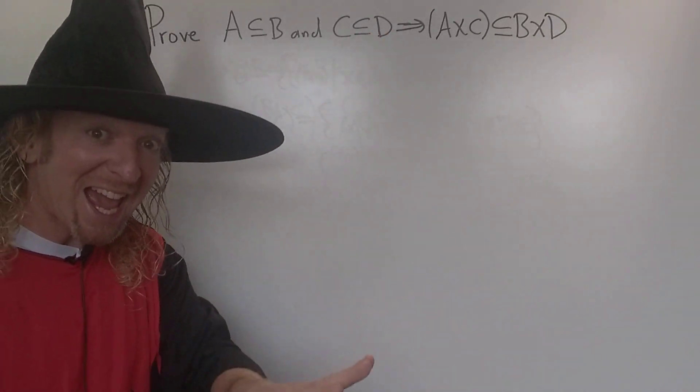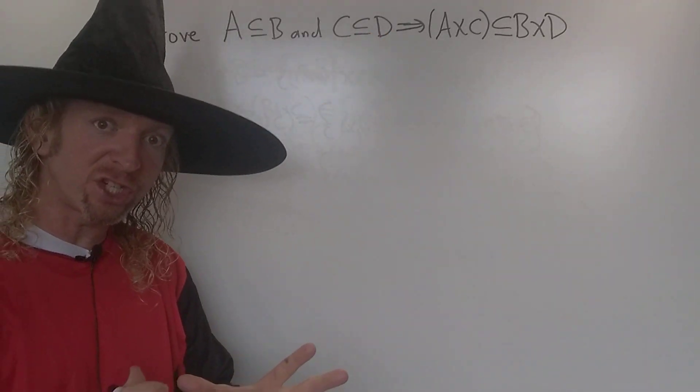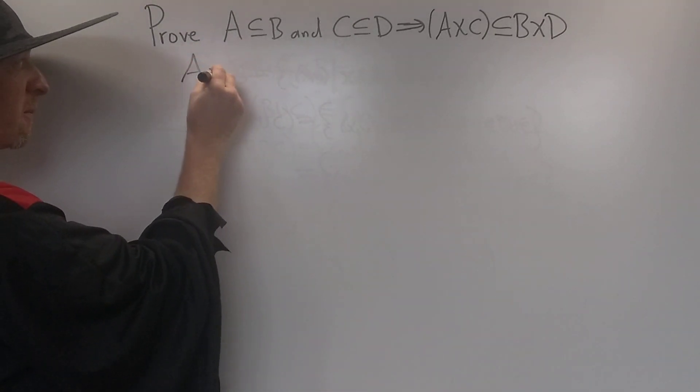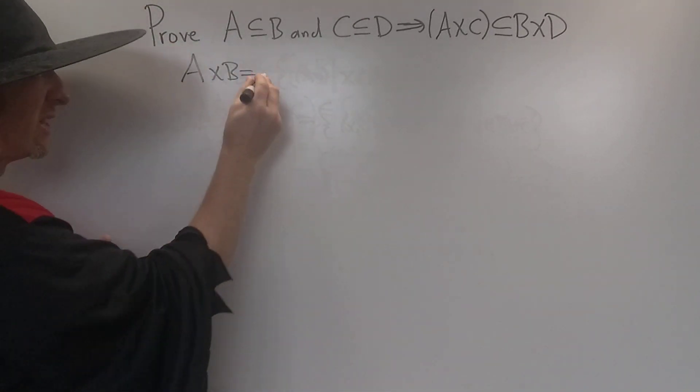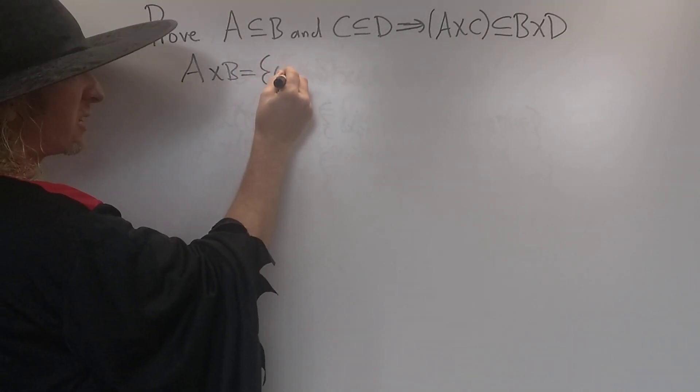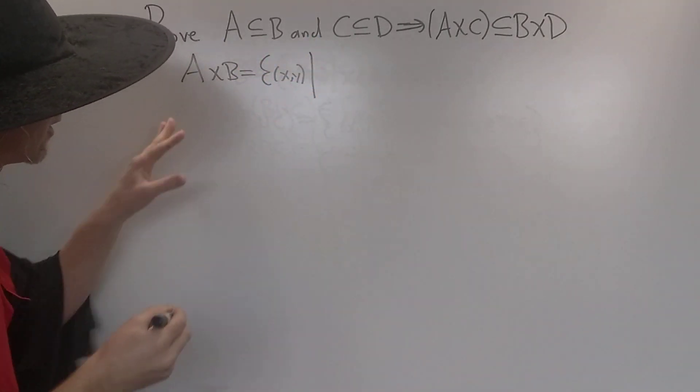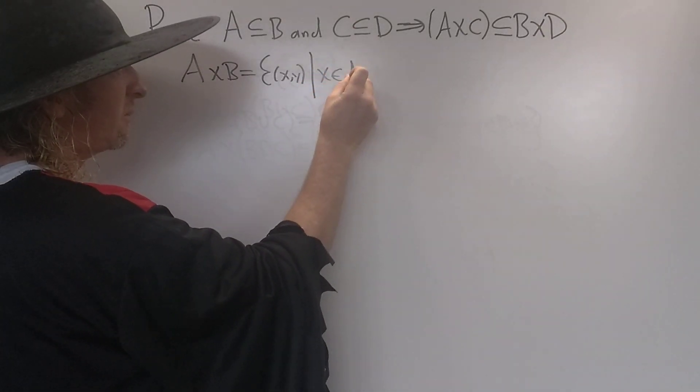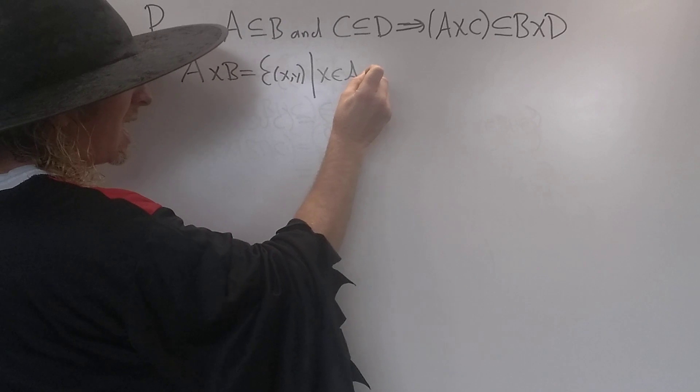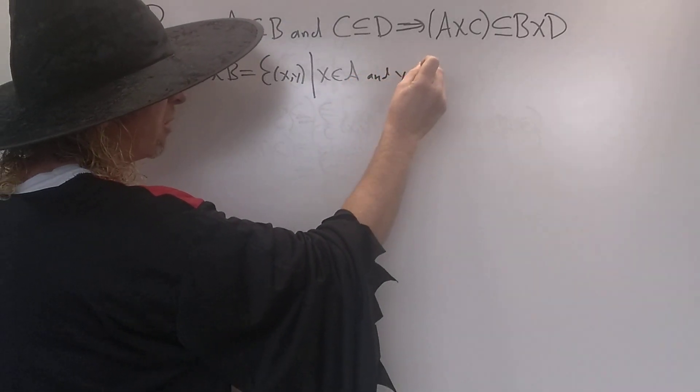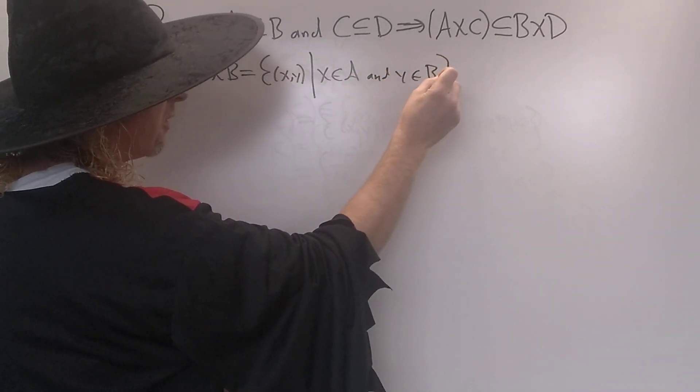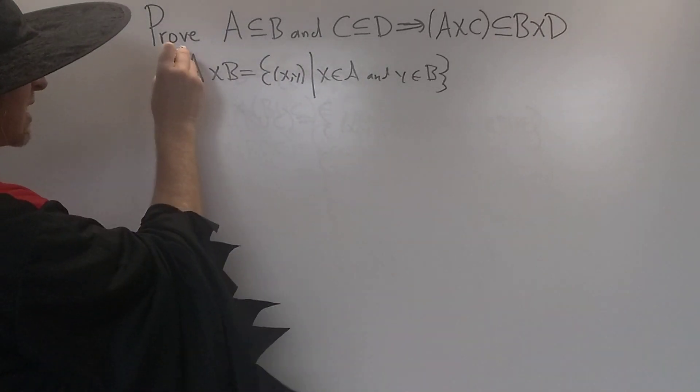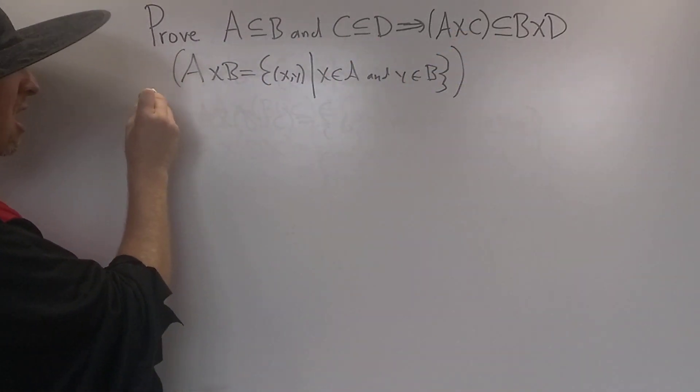Before we do anything, let me recall the definition of cross, that means Cartesian product. So if we have A cross B, this is the set of all ordered pairs X comma Y, such that the first component comes from A, so X is in A, and the second component comes from B, so Y is in B. Both conditions have to hold for something to be a member of this set. That's the definition of A cross B. Let's go ahead and knock out this proof.